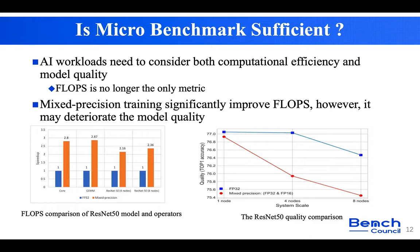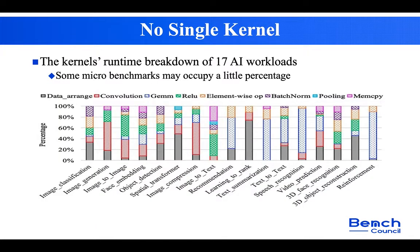We conducted a series of experiments showing that mixed precision training technology significantly improves FLOPs, but it may deteriorate model quality — the first figure shows the FLOPs improvement and the second shows the quality decrease. We conclude that using only micro benchmarks can lead to error-prone conclusions. Another bottleneck is that AI workloads may have no single kernel; analyzing 17 workloads in AI bench, we find many kernels that occupy similar execution percentages.